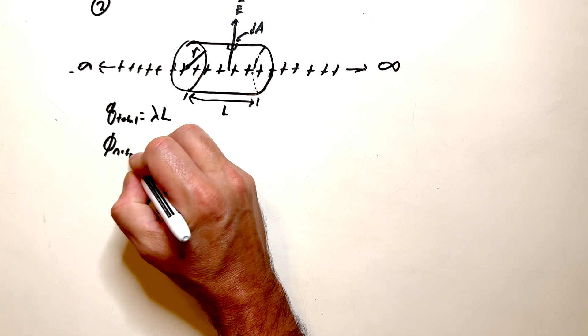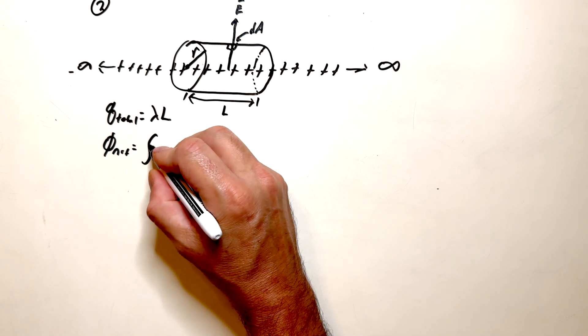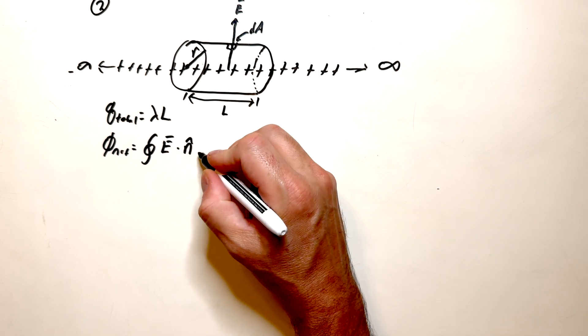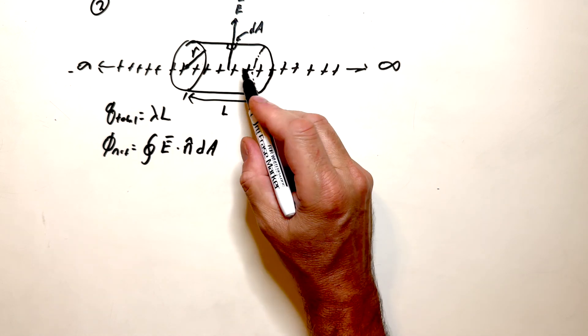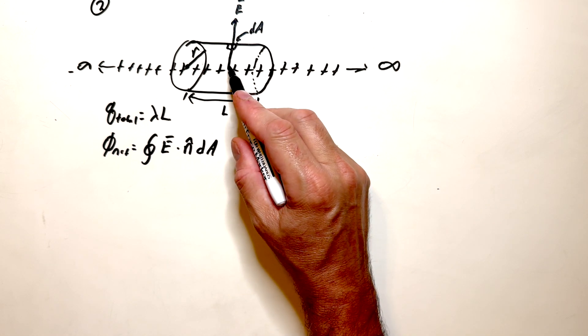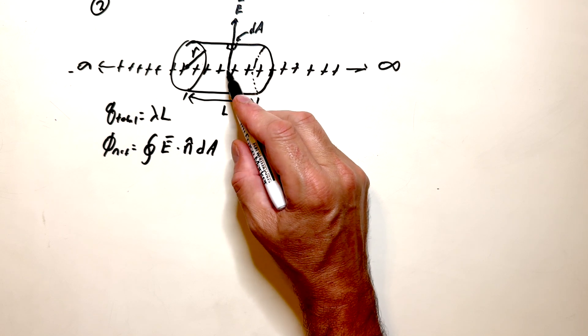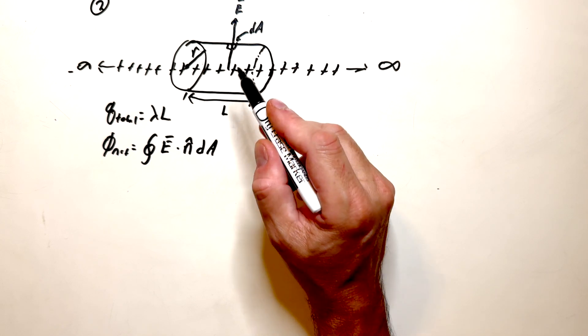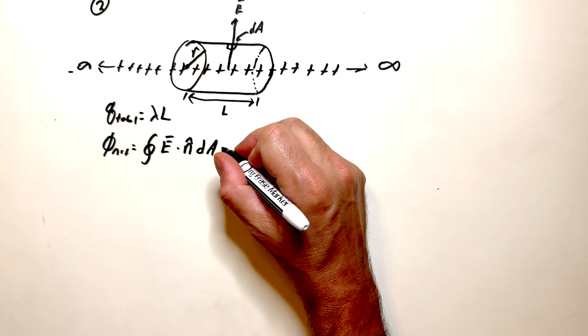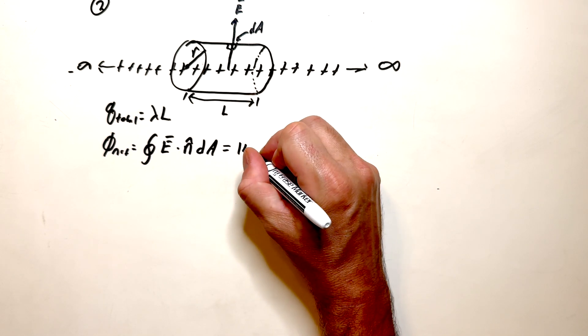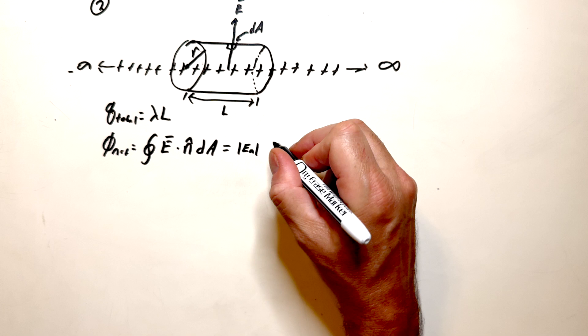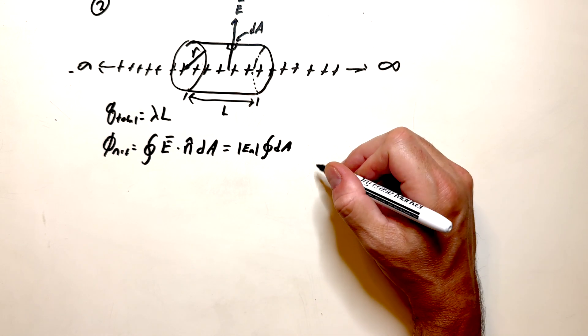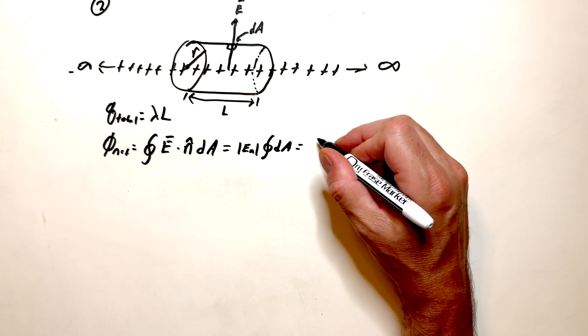Well, the net flux is going to be equal to the closed surface integral of E dot N dA. It's important to note here that the electric field lines are always radially outward from this line of charge. And so, it'll be normal to the surface of this cylinder. So we can write this as magnitude of E sub N times the closed surface integral of dA, which is just equal to...